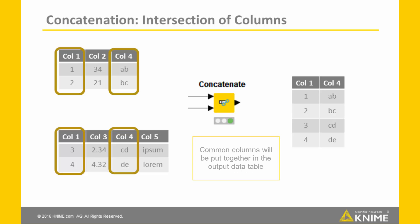Common columns, that is, columns with the same name, will be put together in the output data table. For example, here we have column 1 and column 4 as common columns. And in the output data table, we have column 1 and column 4.